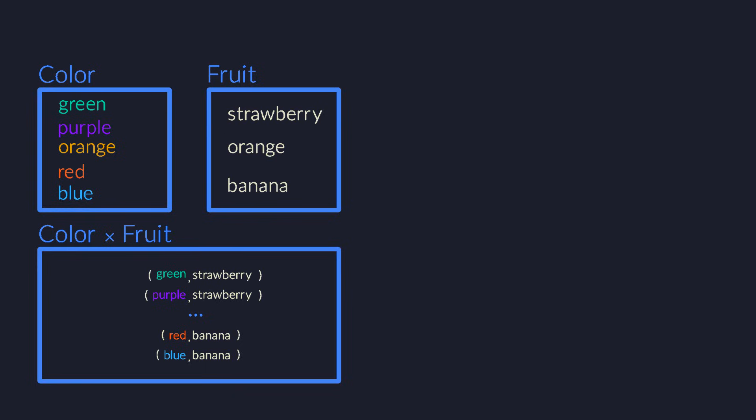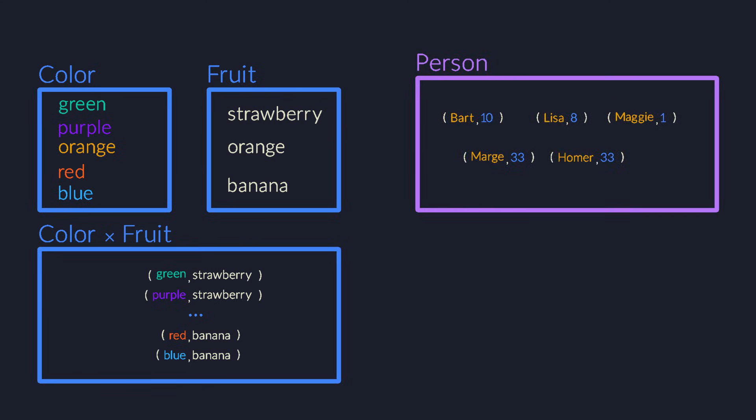In software development, these pairs are often called objects or records. You could model a person as an object with a name and an age. How do you create a person? Just put a name and an age together. That's it.